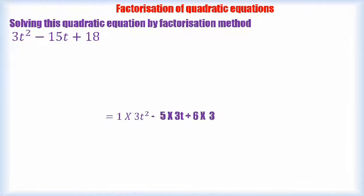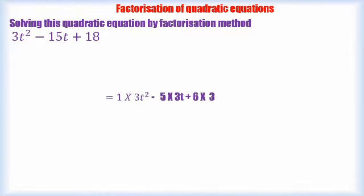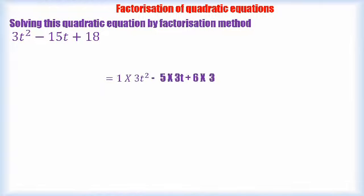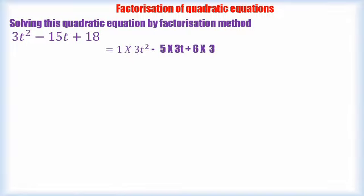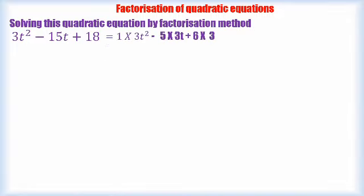Here, one thing is noticed here. All those terms are the multiples of 3. That is 1 × 3 × t² - 5 × 3t. That is nothing but 15t plus 6 × 3. That is nothing but 18.